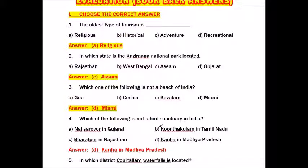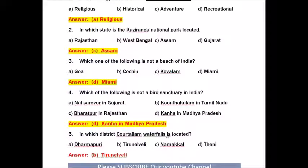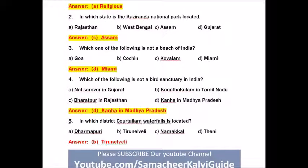Question number four: Which of the following is not a bird sanctuary in India? Option A: Nal Sarovar in Gujarat. Option B: Kundangulam in Tamil Nadu. Option C: Bharatpur in Rajasthan. Option D: Kanha in Madhya Pradesh. The answer is Kanha in Madhya Pradesh — it is a wildlife sanctuary, not a bird sanctuary.